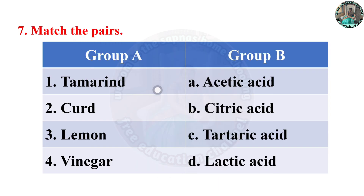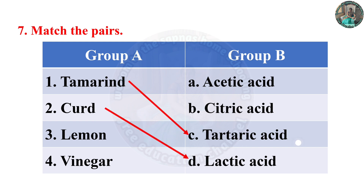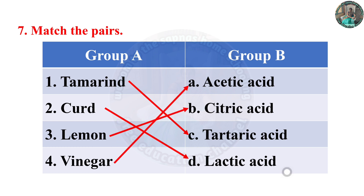Match the pairs — Group A with Group B: Tamarind contains tartaric acid. Curd contains lactic acid. Lemon contains citric acid. Vinegar contains acetic acid.